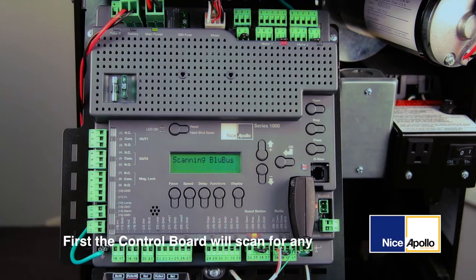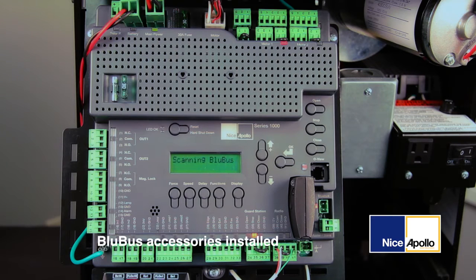First, the control board will scan for any BlueBus accessories installed, which in this example, there are none.